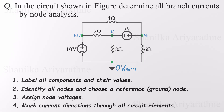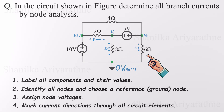Now it's time to assign current directions and voltage polarities. Since we have no current sources, we move on to the resistors. Let's label the current flowing through each one as I1, I2, I3, and I4. The directions you choose are totally up to you — if you guess wrong, the calculation will give a negative value, meaning the current flows the other way. Once you pick a direction, make sure your voltage polarities across each resistor match it.